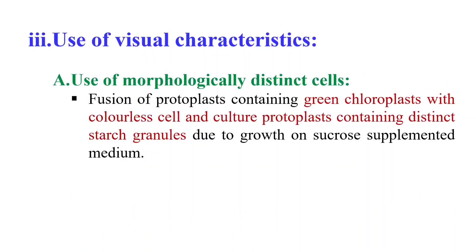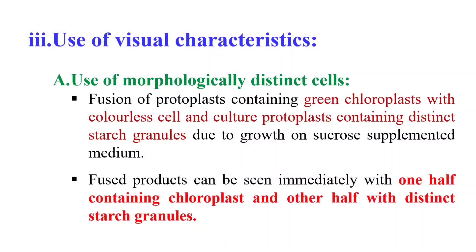Next, we can also use visual characteristics to identify or select somatic hybrids. For example, by using morphologically distinct cells — if we fuse green chloroplast cells with protoplasts that contain starch granules, the hybrid cell will contain half portion of protoplasts and the other half with distinct granules. We can morphologically observe under the microscope that if the fusion was between green chloroplasts and protoplasts containing distinct starch, both chloroplasts as well as starch granules will be present in the hybrid. So you can easily select them by morphological analysis.